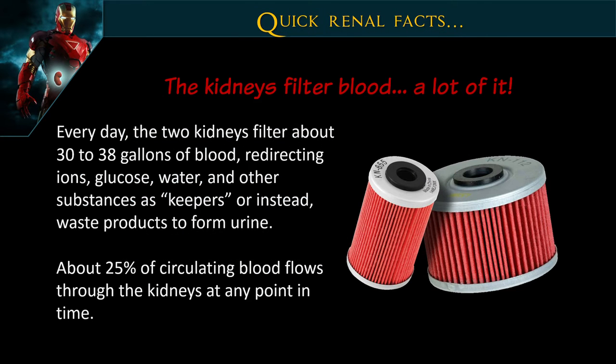What exactly do the kidneys do? Well, they filter blood — we all know that. At any given time, about 25% of the blood volume in the body is going through the kidneys. They filter about 30 to 38 gallons of blood, redirecting different things throughout the body — retaining some of it and making waste products from other portions.